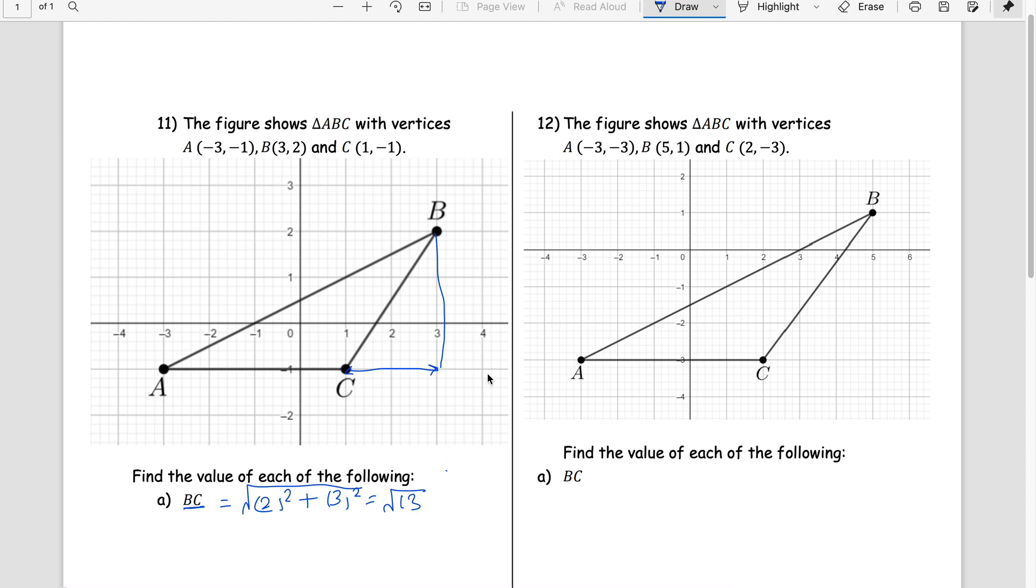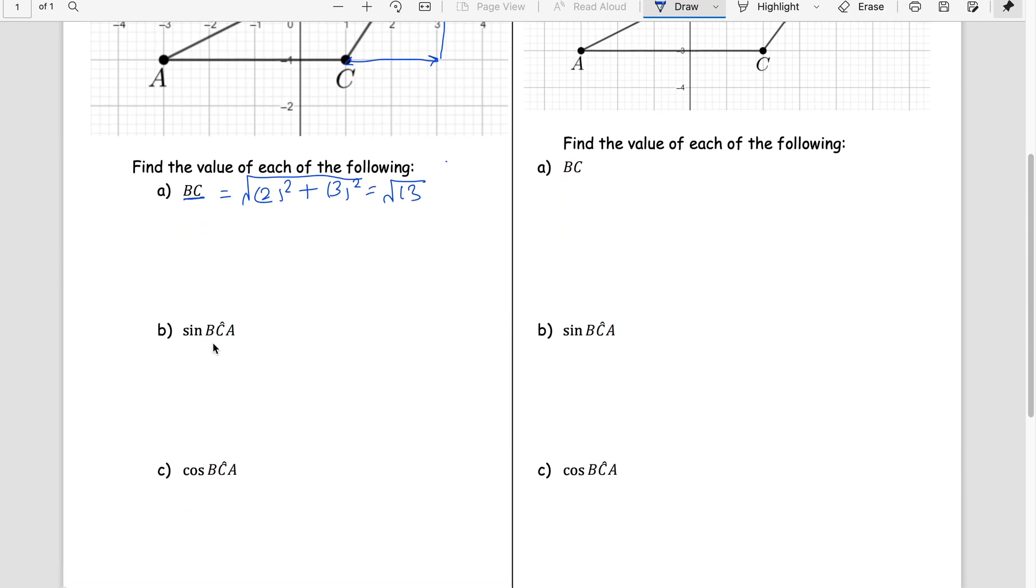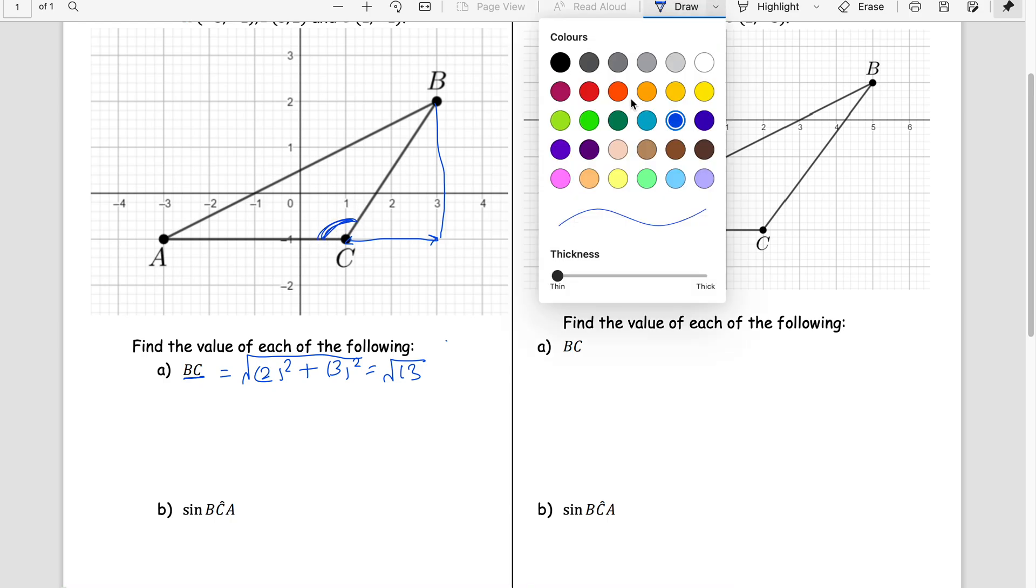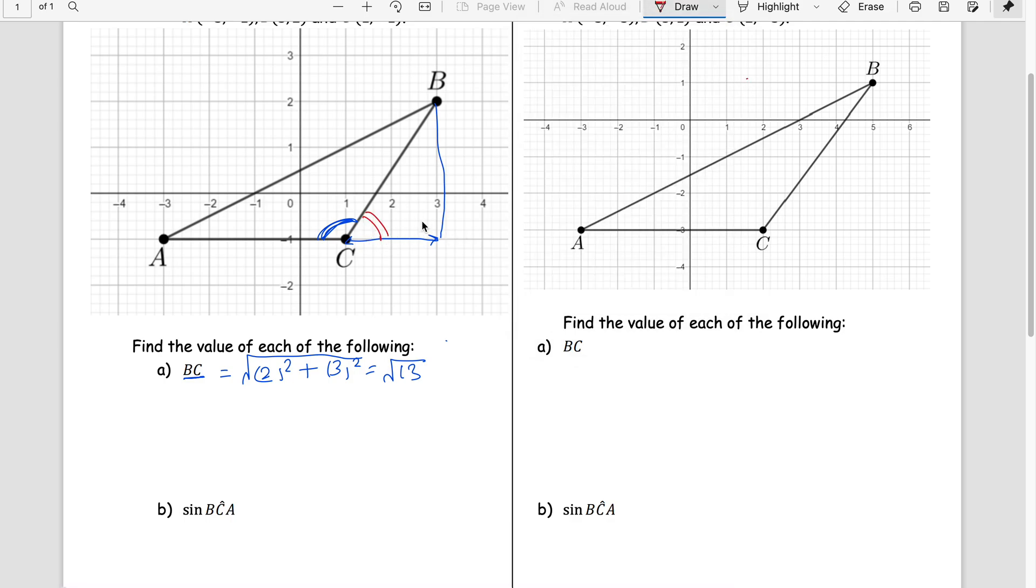Then the question says sine BCA. Now look at this: BCA is actually obtuse. We cannot answer for this obtuse, so we will go into this acute angle marked in red. We know that sine stays the same. For this we knew that the length was under root 13, this length is 2, and this length is 3. So sine is perpendicular over hypotenuse, and with the positive sign, because for sine acute and obtuse both are positive.